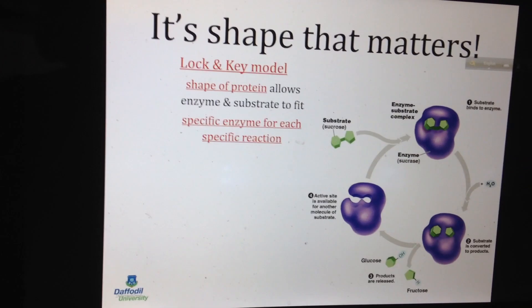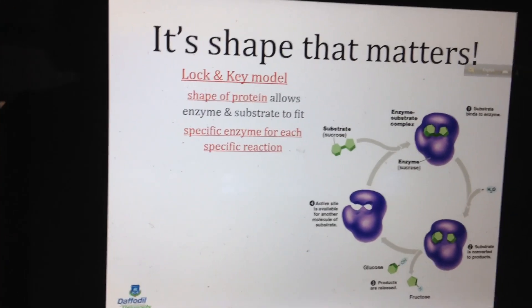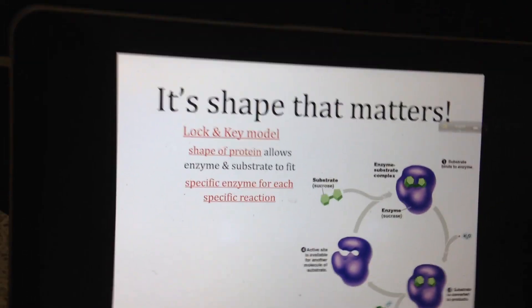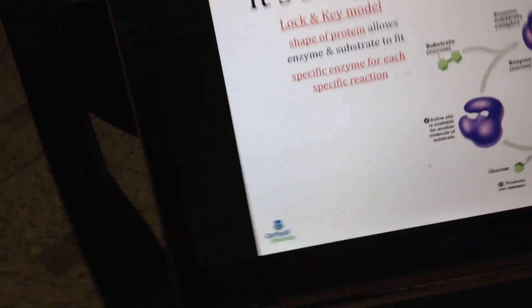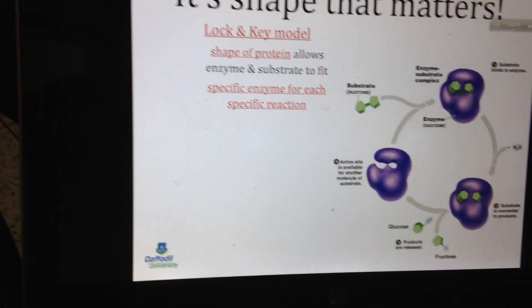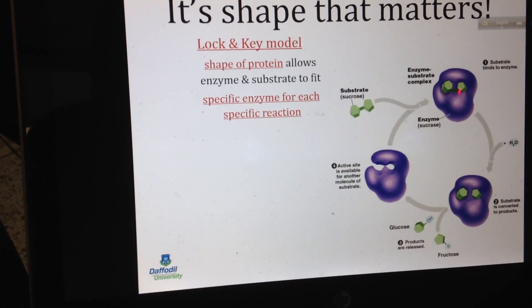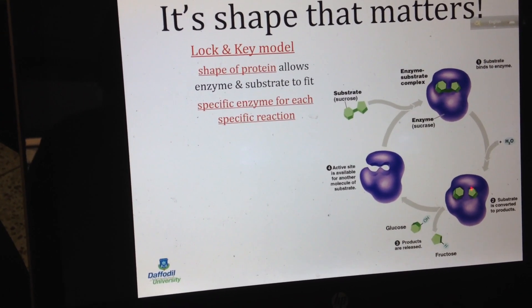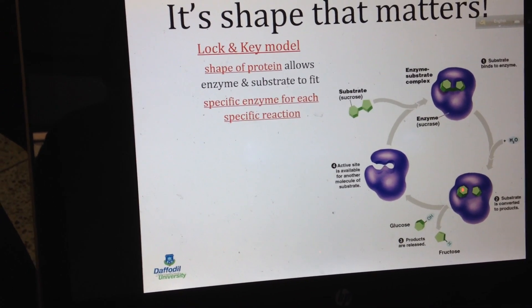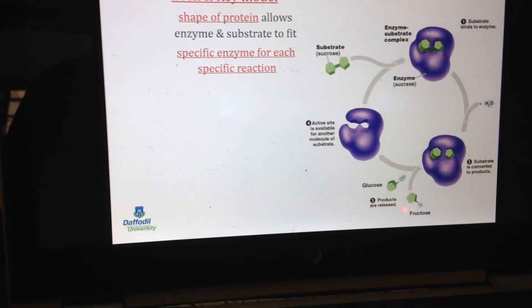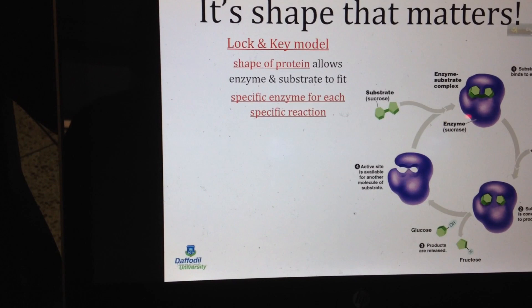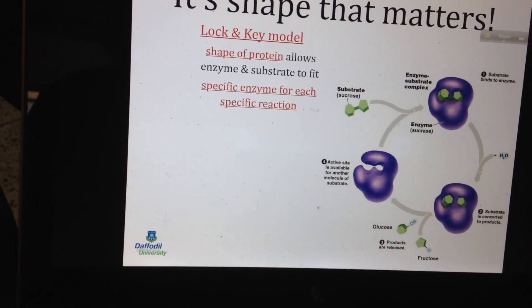The lock and key model implies that the enzyme must have a certain shape of pocket which helps it to bind to the substrate. Only a substrate of a definite shape can bind into it, and upon binding the enzyme can split it into two different groups. The reaction is complete, the product is released, and the enzyme returns to its original form. This is known as the lock and key model for enzyme catalysis.